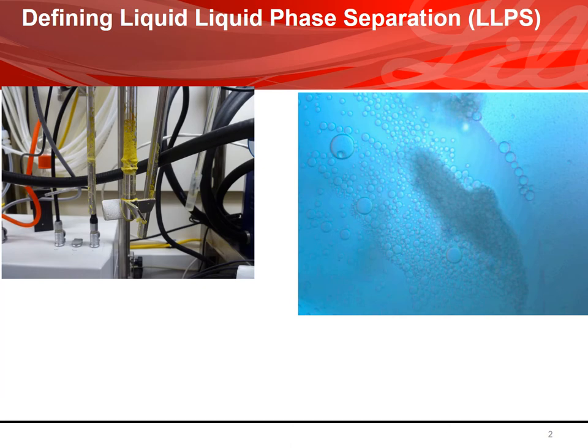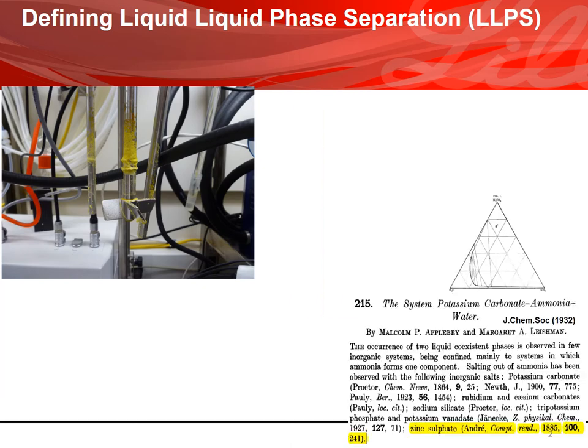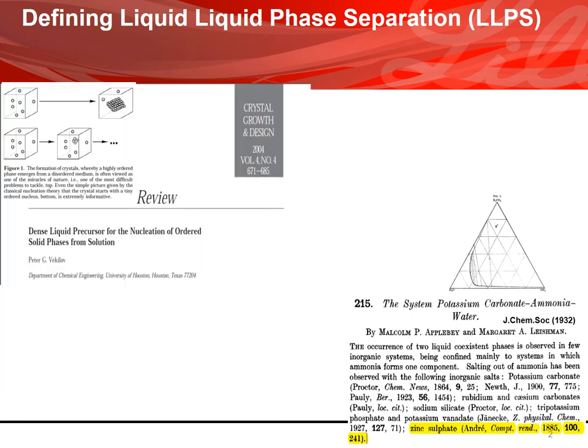LLPS can occur for different physical reasons and has been described for different types of molecules. It was first reported for inorganics more than 130 years ago, and has been reported for large molecules such as proteins, peptides, or polymers. Work by Vekilov on proteins gave rise to the two-step nucleation theory, which we will discuss later.